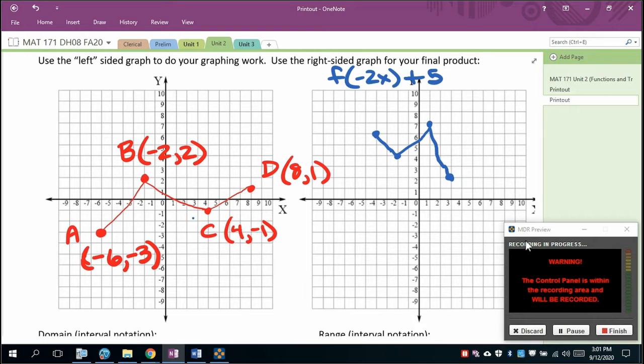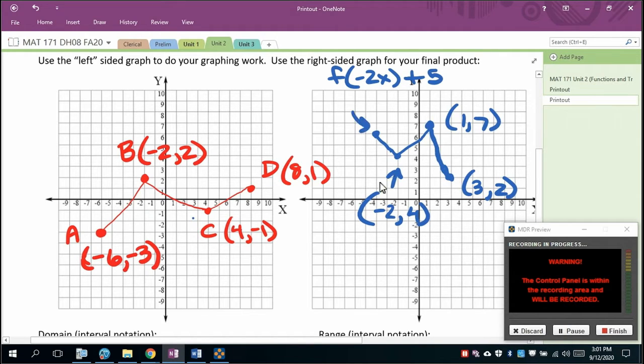So we're going to do f of negative 2x plus 5. Now we're going to use the example that was gone over in class. If you remember the final answer from yesterday: 3, 2; 1, 7; that's negative 2, 4; and lastly negative 4, 6.